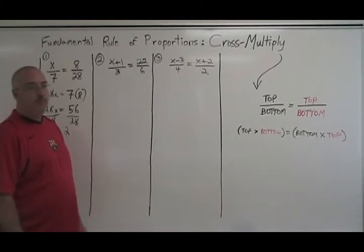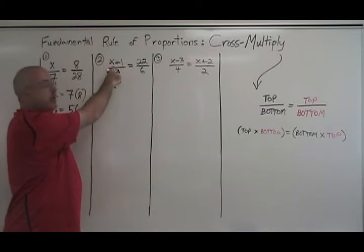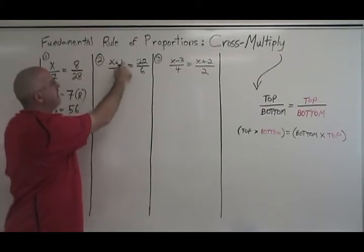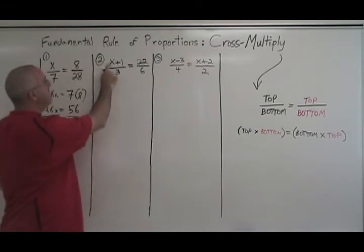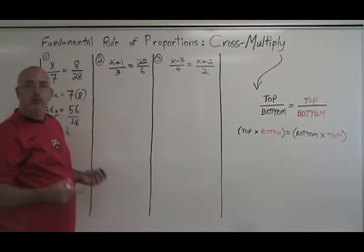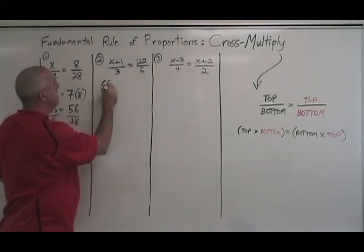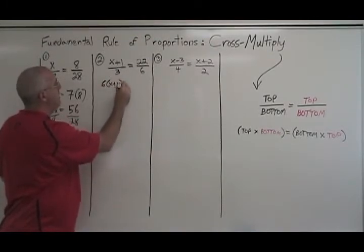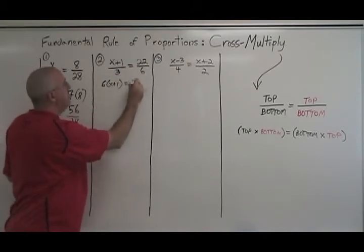In example two, we have a slightly more complicated looking proportion because our variable is part of a little algebraic expression here in the top left, x plus 1. But we still apply cross multiplication. Top times bottom means 6 times x plus 1 equals bottom times top means 3 times 22.